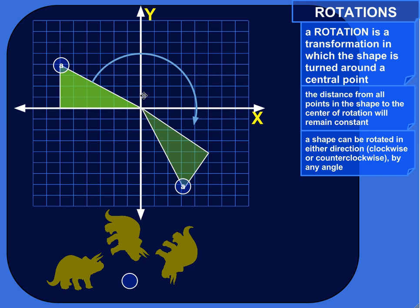And the shape can be rotated either direction, clockwise or counterclockwise. A counterclockwise rotation is a positive rotation. A negative rotation is clockwise, like this. So here's a negative rotation.